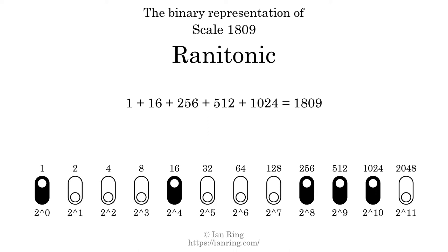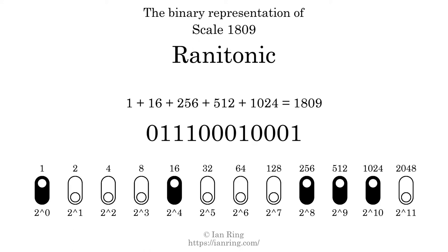That is why the scale number, in decimal, is 1809. The scale number not only enumerates the scale with a unique index, but it also literally describes the tonal content of the scale. Represented as a binary number in base 2, the scale number is 0, 1, 1, 1, 0, 0, 0, 1, 0, 0, 0, 0, 1.